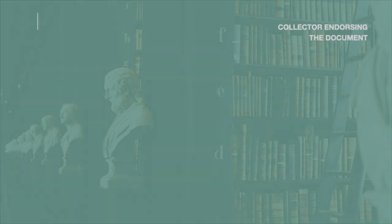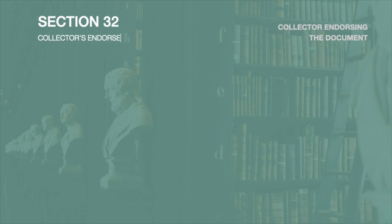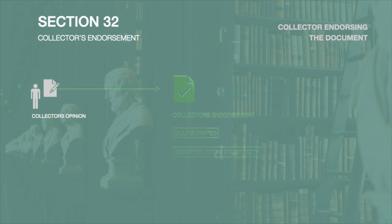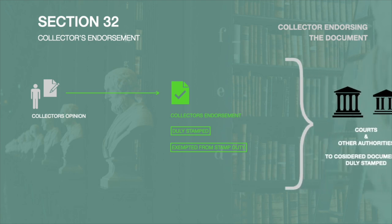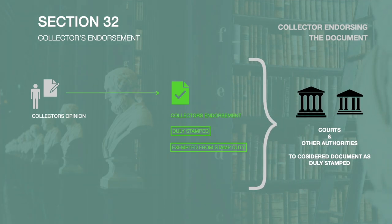Section 32 talks about a certificate in the form of an endorsement on the document. This certificate or endorsement is obtained from the collector in cases where the collector receives a document that is duly stamped as per the collector's opinion and after following the process and arriving at the calculations under section 31.